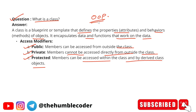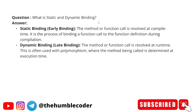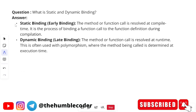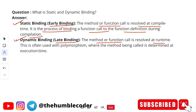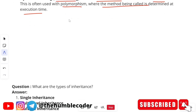What is static and dynamic binding? There are two types of binding. Static binding is also called early binding — the method or function call is resolved at compile time; it is the process of binding a function call to the function definition during compilation. Dynamic binding is also called late binding — the method or function call is resolved at runtime; this is often used with polymorphism where the method being called is determined at execution time.